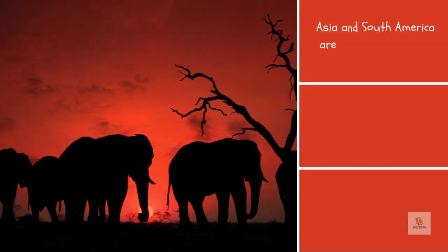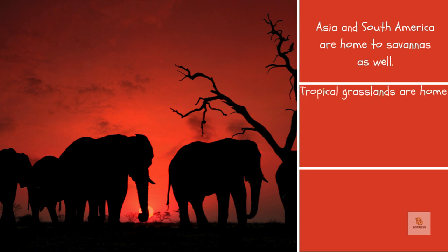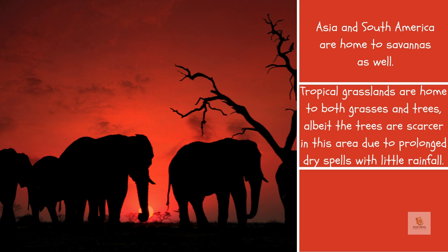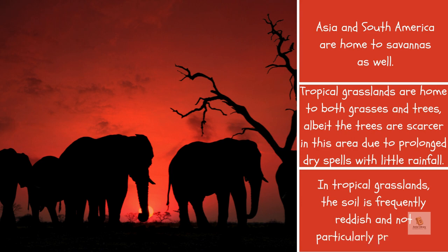Asia and South America are home to savannas as well. Tropical grasslands are home to both grasses and trees, albeit the trees are scarcer in this area due to prolonged dry spells with little rainfall. In tropical grasslands, the soil is frequently reddish and not particularly productive.